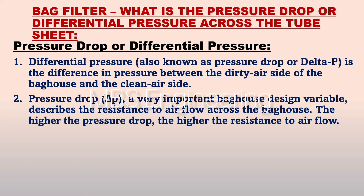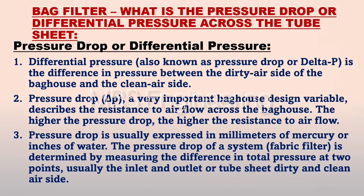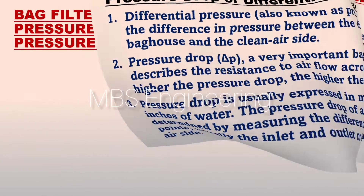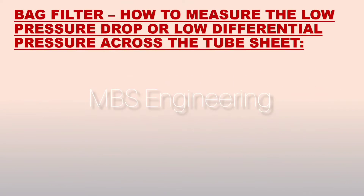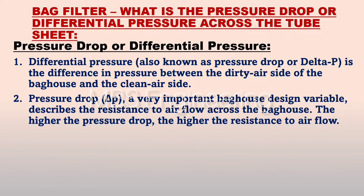Point number 2: pressure drop, delta P, is a very important baghouse design variable that describes the resistance to air flow across the baghouse. The higher the pressure drop, the higher the resistance to air flow.